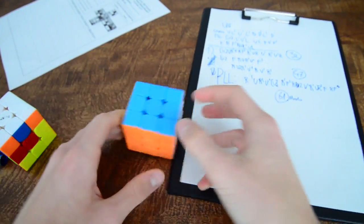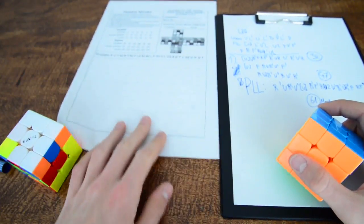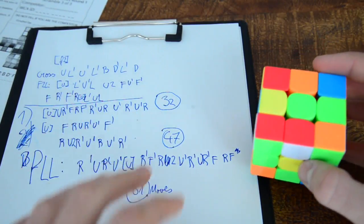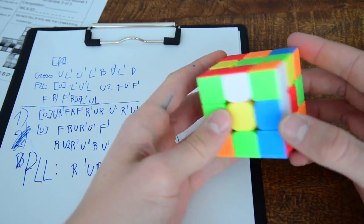Okay, so when we're done with the solution, let's re-scramble the cube again. So let's get our solution and let's go through it.